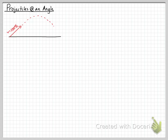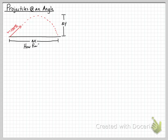We have a velocity of 100 meters per second for something launched at a 30-degree angle. We need to determine the displacement in the x-direction and the displacement in the y-direction — so we're looking for how far it travels and how high it goes.